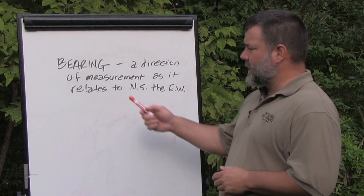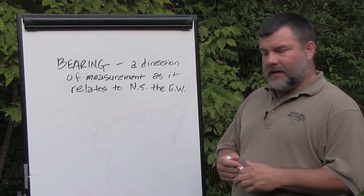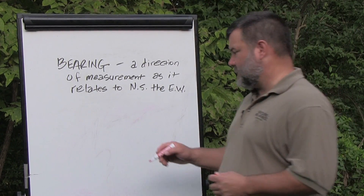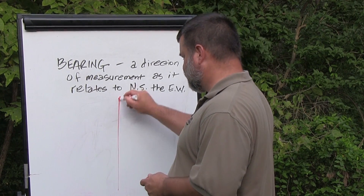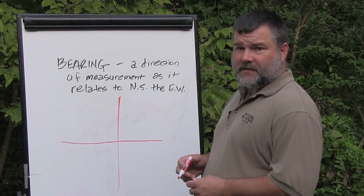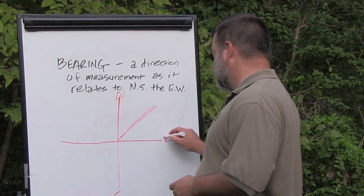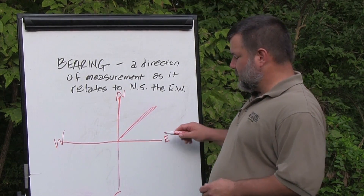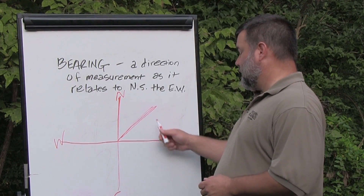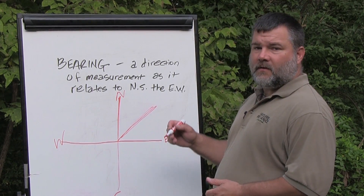Most people will use bearing interchangeably with azimuth, and while that is true to a degree, it's not technically correct. A bearing is a direction of measurement as it relates to north, south, east, and west. Let's draw a north-south line and an east-west line. For that same 45 degrees — because it's above the east-west line we reference north, and because it's 45 degrees away from the north line — we call that North 45 East.